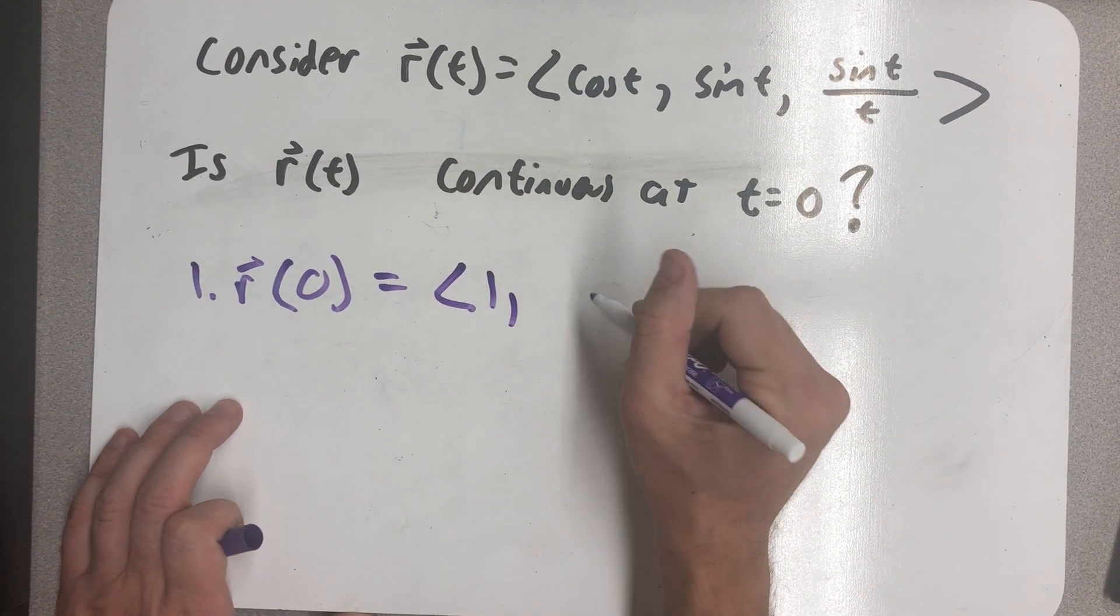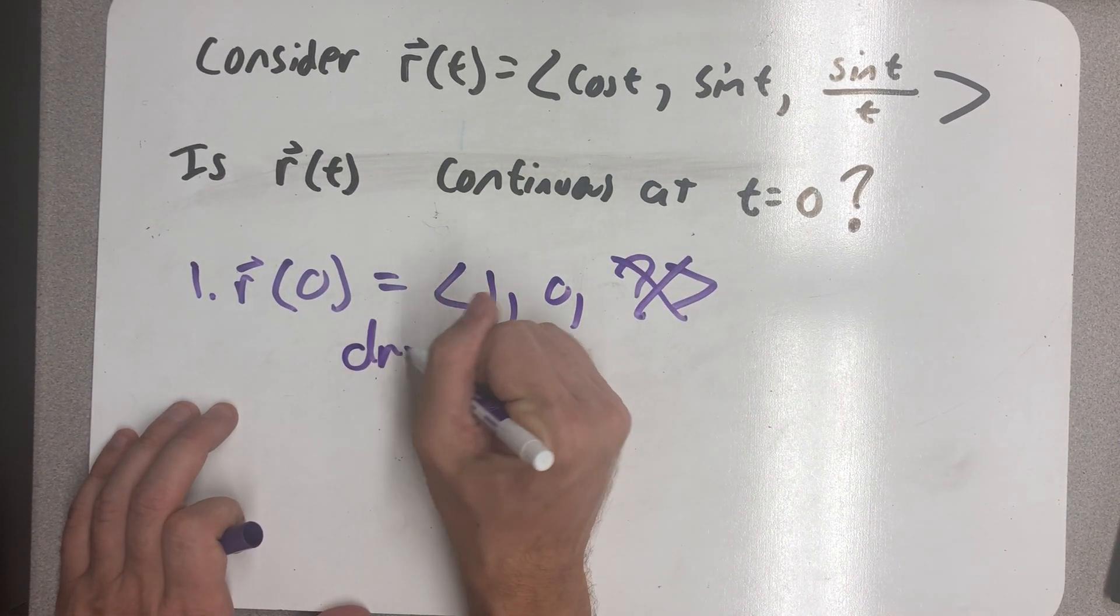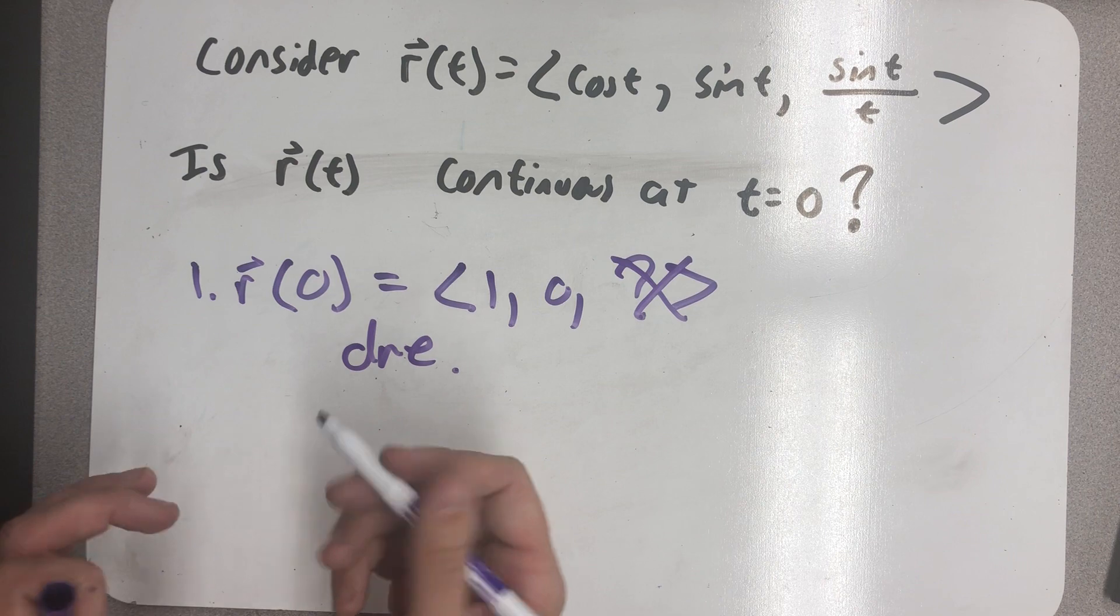I get one comma, zero comma, you can't divide by zero. So r of zero does not exist, so this function is not continuous at zero.